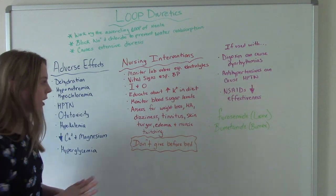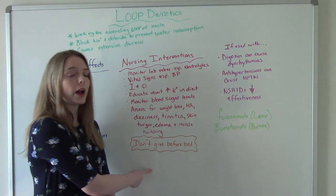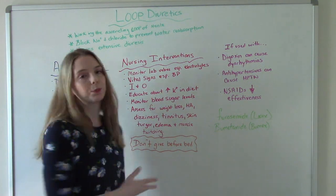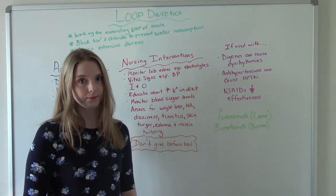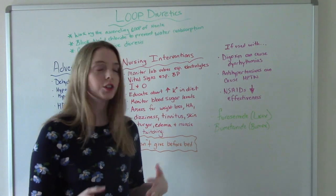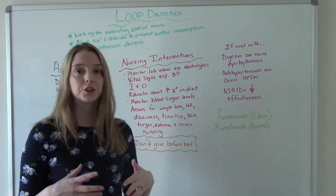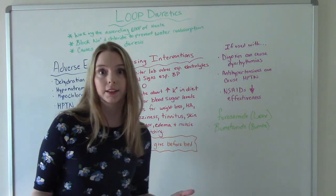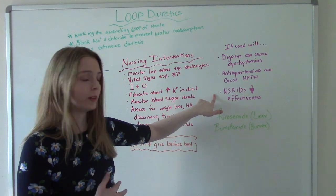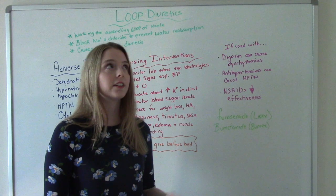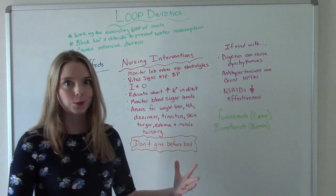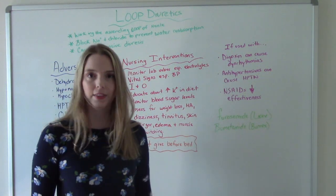One special thing: loop diuretics should not be given right before bedtime, because the patient will be up all night using the bathroom. Some important drug interactions: if used with digoxin, there is potential to cause a dysrhythmia. If the patient is already on another antihypertensive like a beta blocker, it can make hypotension even more severe. If they're using NSAIDs along with this medication, the NSAIDs could decrease the effectiveness of the loop diuretic. Commonly used loop diuretics include furosemide (Lasix) and Bumex.